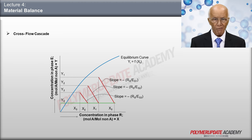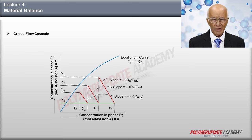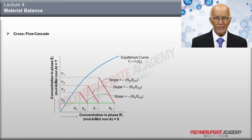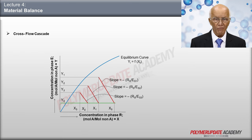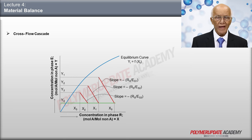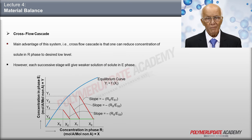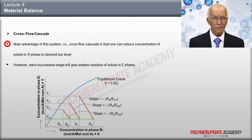This is the schematic diagram of what is happening. You can see that three stages are drawn here: stage 1, stage 2, and stage 3. Each has a slope equal to minus RS/ES1, minus RS/ES2, and minus RS/ES3 respectively, so the ES quantity can be varied. The outlet concentration of stage 1, x1, becomes the feed to stage 2, and the outlet concentration of stage 2, x2, becomes the feed to stage 3, and finally it comes out as x3. The main advantage of the cross-flow cascade is that one can reduce the concentration of solute in the R phase to a desired low level.